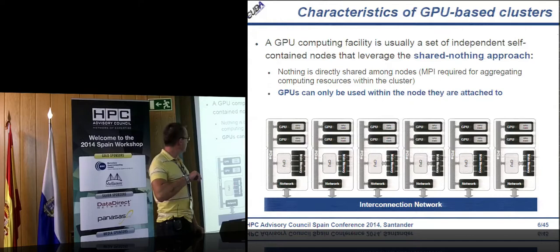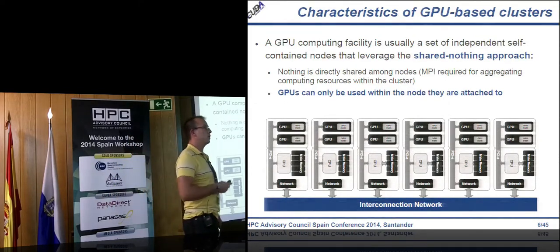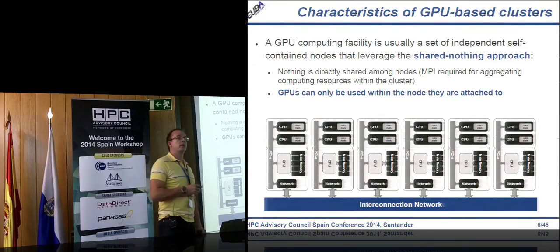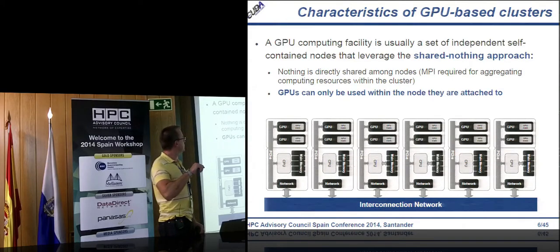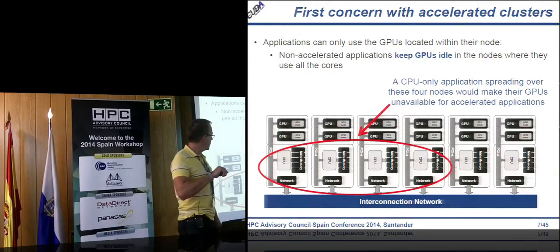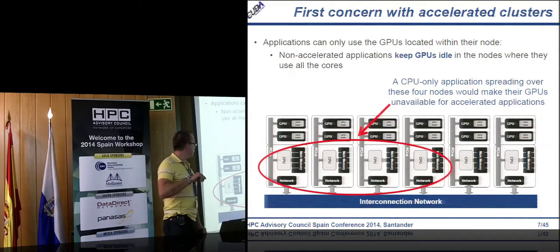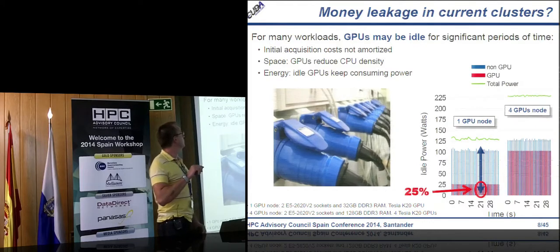This is something everybody knows and considers the usual way to use GPUs. But I propose using GPUs in a different way. Consider an application spreading across four nodes that is CPU-only. It uses all cores of those nodes, so no other application can run on those nodes, and therefore the GPUs remain idle — we bought the GPUs but we are not using them.